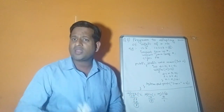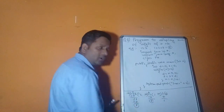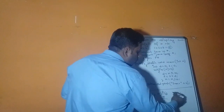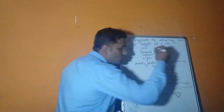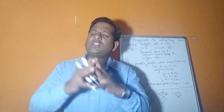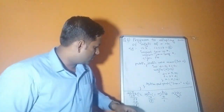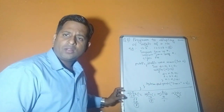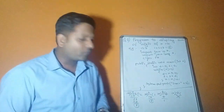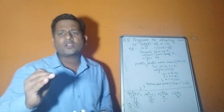Initially the number is 123, then it turns to 12, then to 1, and finally to 0. When the number becomes 0, we stop the loop. So whenever you get a digit-based question, the condition is: number should be greater than 0. To extract a digit, divide the number by 10 — the last digit comes as the remainder, which we get using the modulus operator (percentage sign).